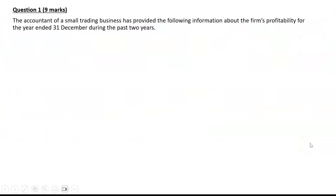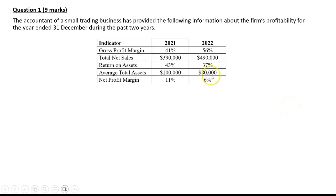Question 1-8. We were given the following information. The accountant of a small trading business has provided the following info about the firm's profitability for the year ended 31st December during the past two years. We've got some figures for 2021 and some figures for 2022, and it's a mixture of our financial indicators.